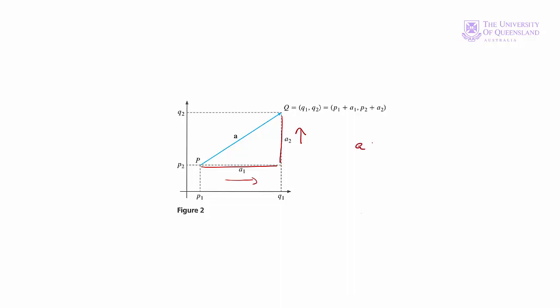The hypotenuse is the length of A squared, is equal to A1 squared plus A2 squared. Taking the square root, the length of A is equal to the square root of A1 squared plus A2 squared. The same principal holds in the n dimensional case.